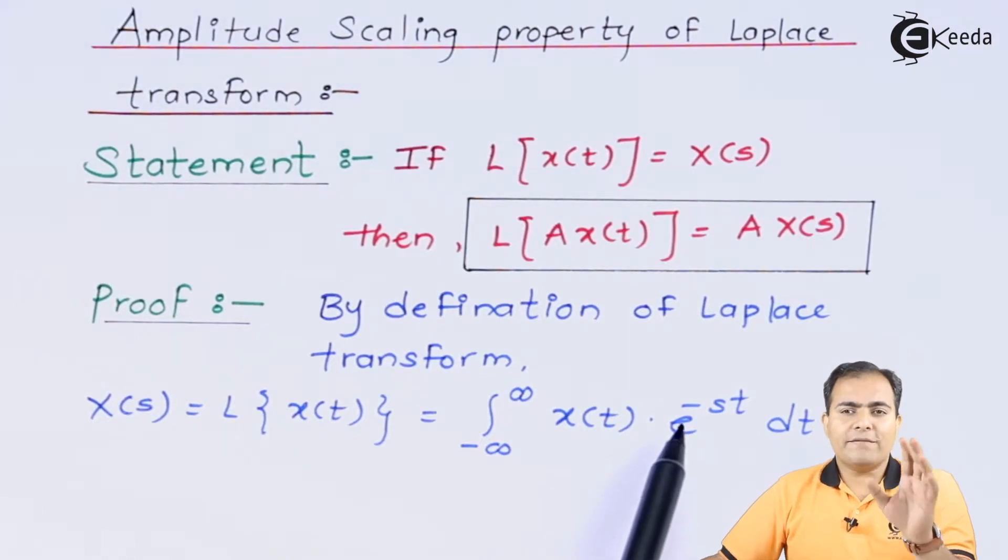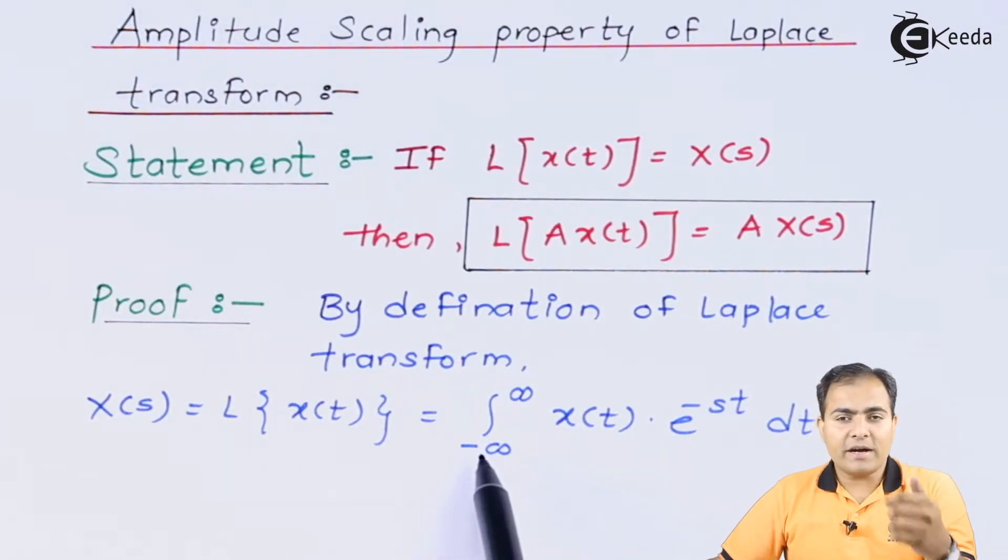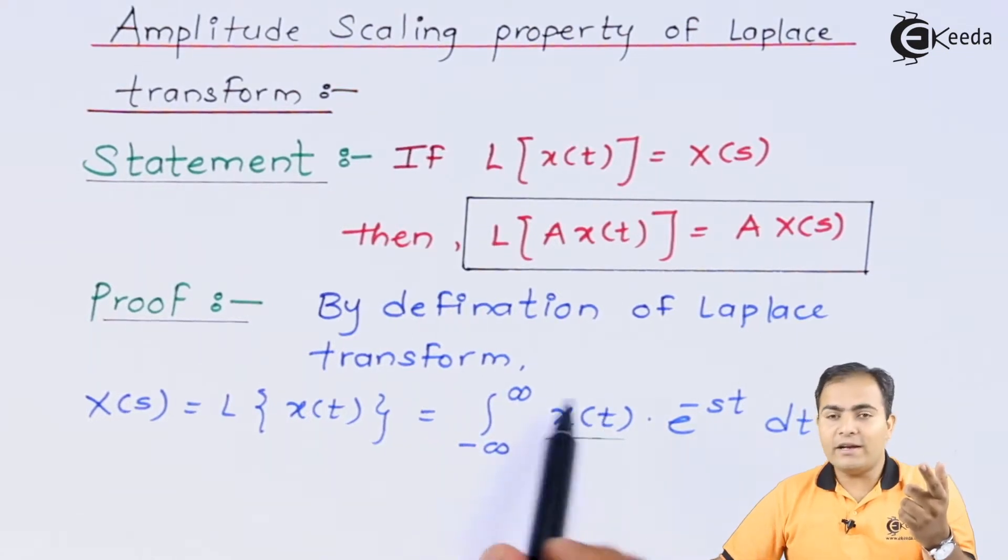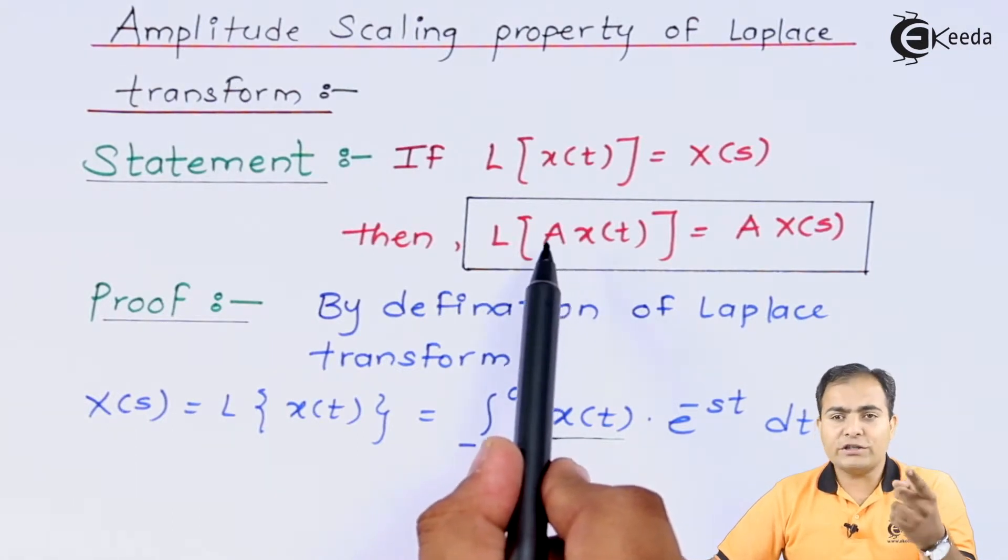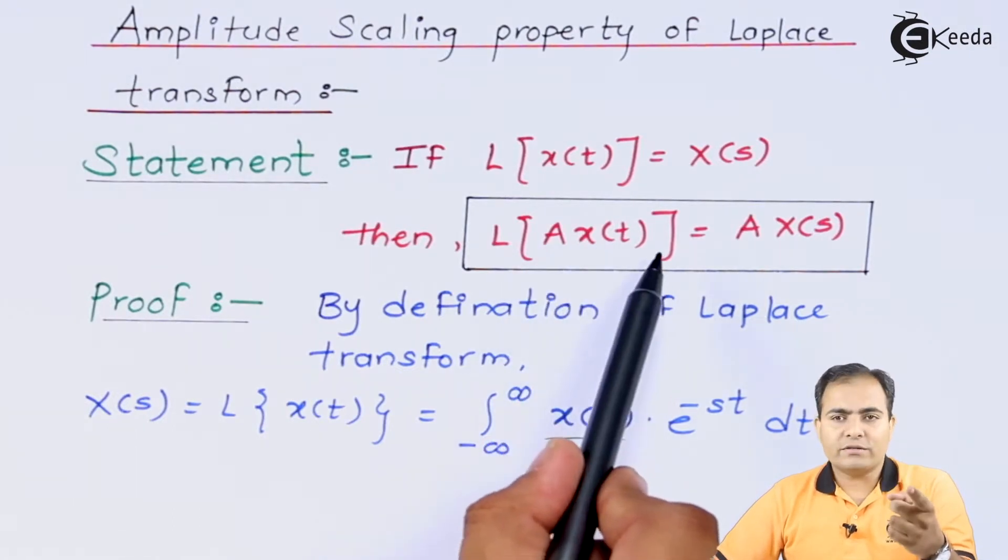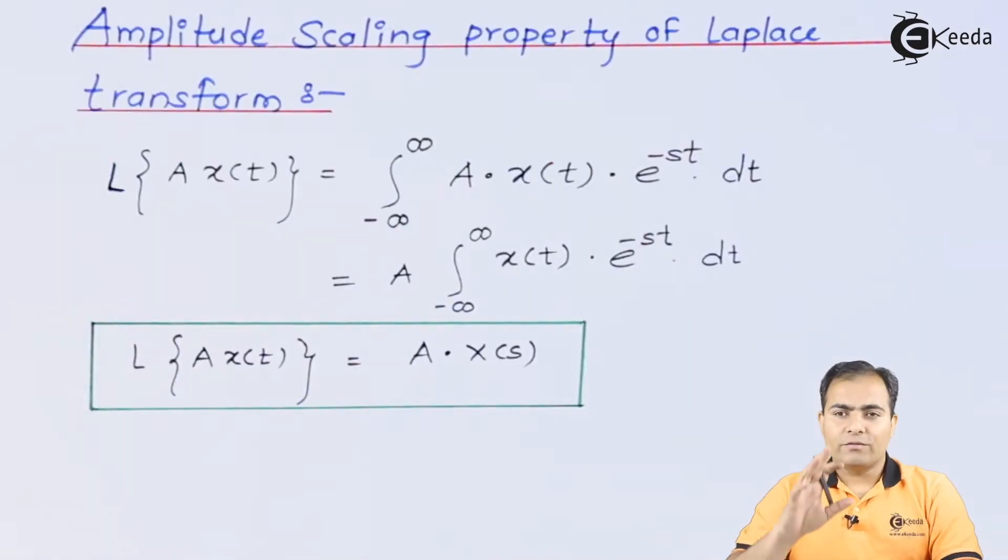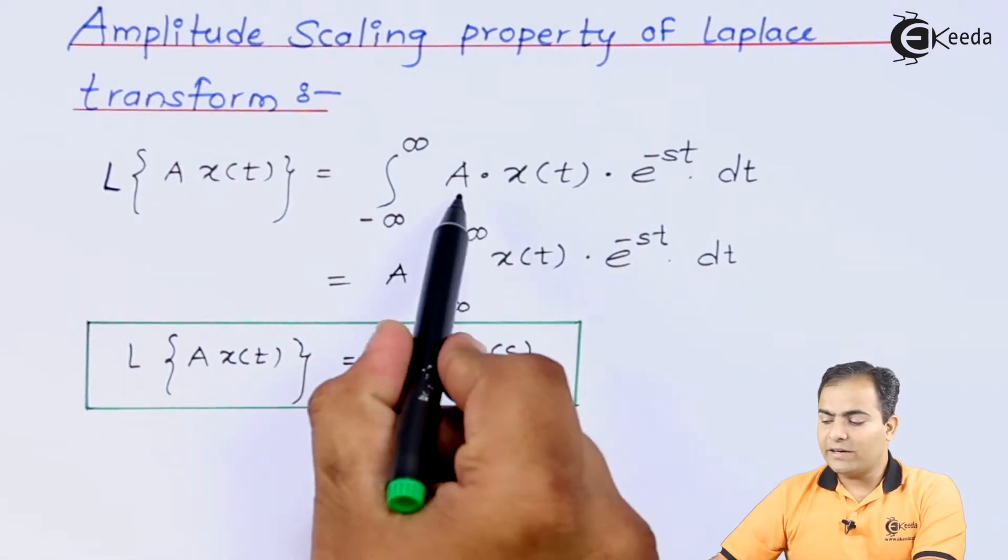Now here we are going to substitute the value of x of t. Right now the amplitude or a function is A into x of t. So let's see what will be the result of this A x of t. Now what we are going to do? We are going to substitute x of t by A x of t. So I have simply placed A x of t in my equation.